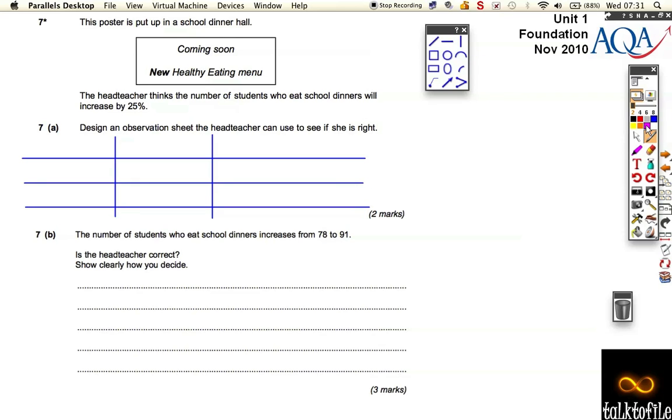I just need to write in some words here. OK, so let's have a tally and a frequency thing and then literally, the number of pupils that eat food on the old menu and the number of pupils that eat food on the new menu.